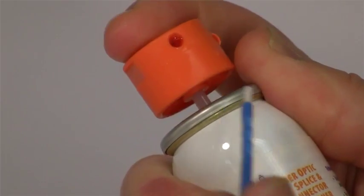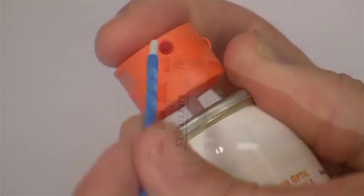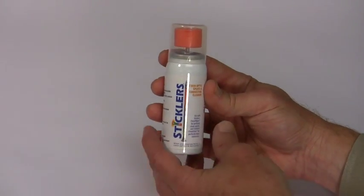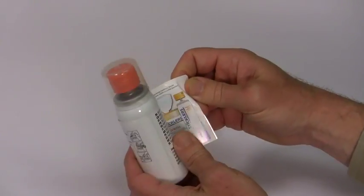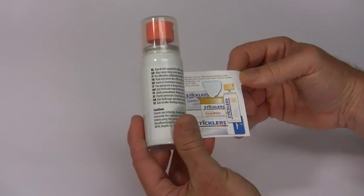Metered dose dispensing means you get over 400 ready-to-use cleans per can. Multinational companies will appreciate that the container has a unique hinged label containing 11 translations of warning statements for EU safety compliance.